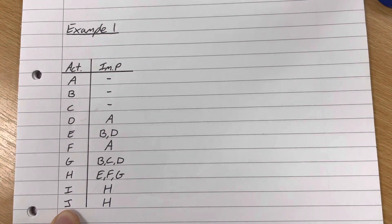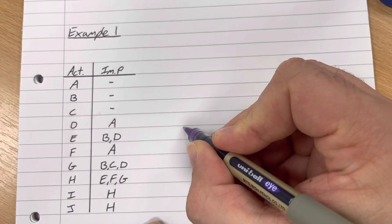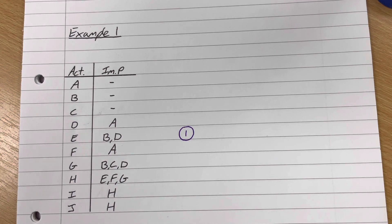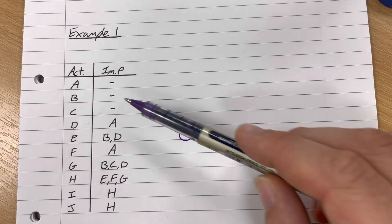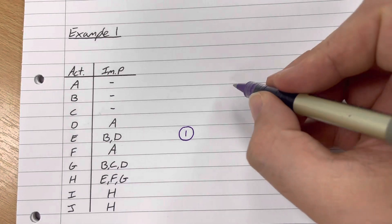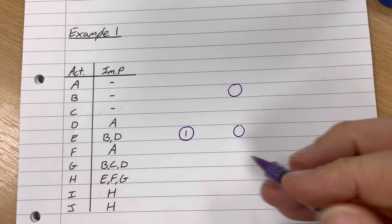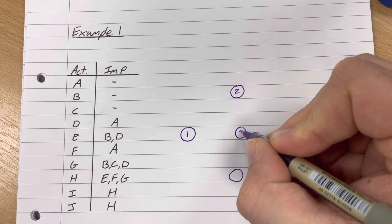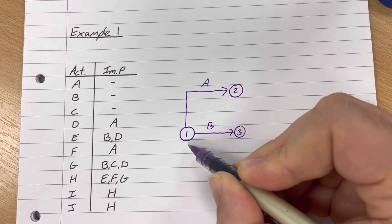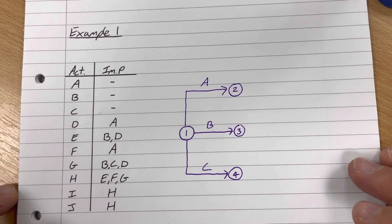These are the activities - we've got 10 different activities in this network, and this represents which activities need to be completed before others can be started. Whenever you start to draw an activity-on-arc network, you're going to start with a node, which is a circle with a number in it - typically starting with number one. Because of the rule that you cannot have two arcs going between any pair of nodes, activity A goes to one node, B to a different node, and C to yet another. So we've got nodes 2, 3, and 4 for activities A, B, and C.